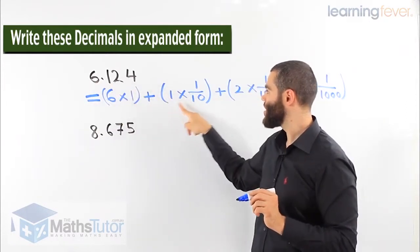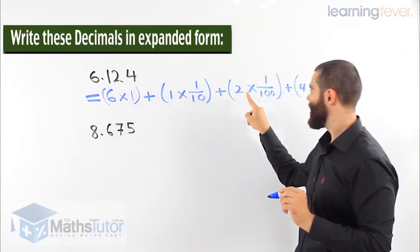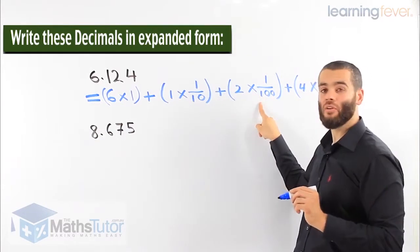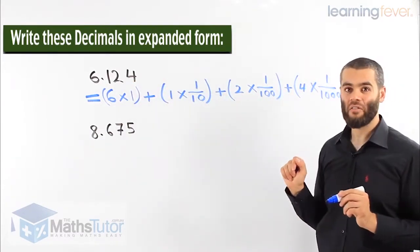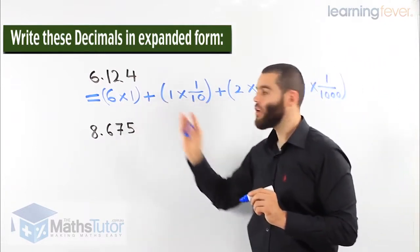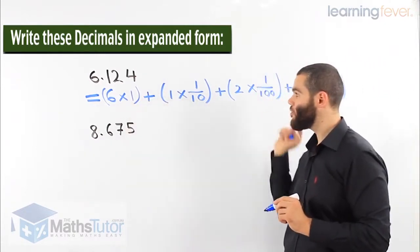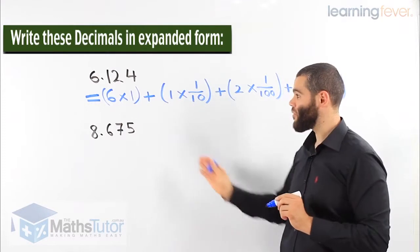So 6 times 1 is in the ones column. The 1 in this case is in the tenth column. And then we have the 2 is in the hundredth column. And the 4 is in the thousandth column. So here we have now written this decimal in expanded form. Very easy. Very straightforward.